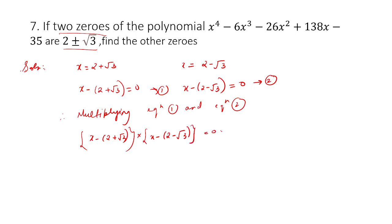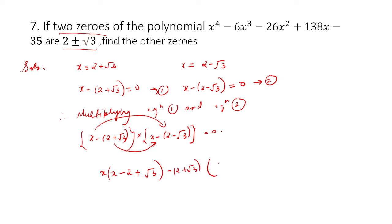You can always put it equal to 0. So let us multiply — I will open up the bracket. Minus 2 plus root 3 with a minus sign becomes x minus 2 plus root 3. So x into x becomes x squared, x into minus 2 plus root 3 gives minus 2x plus root 3 x.